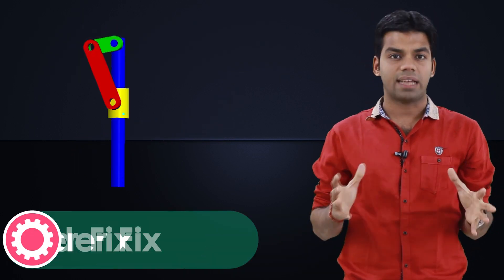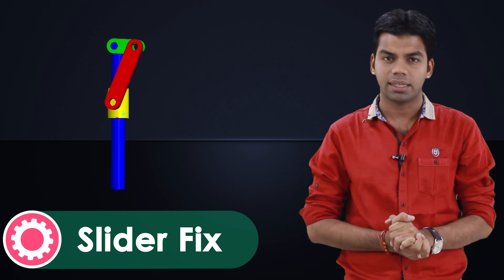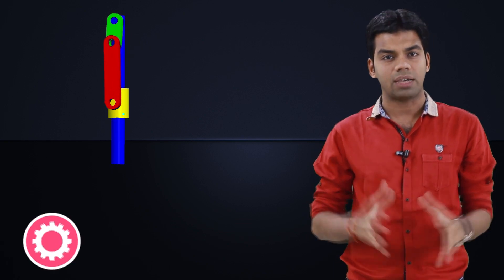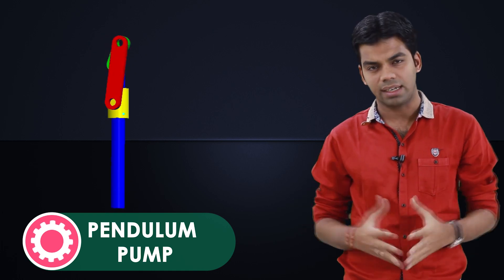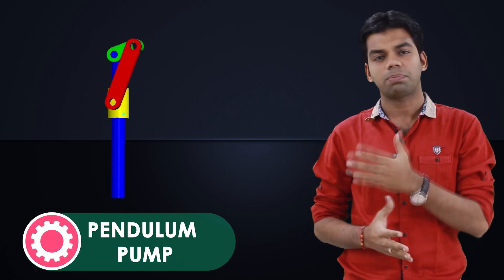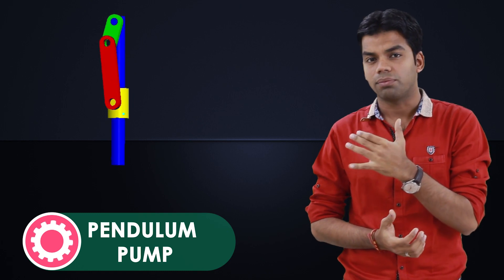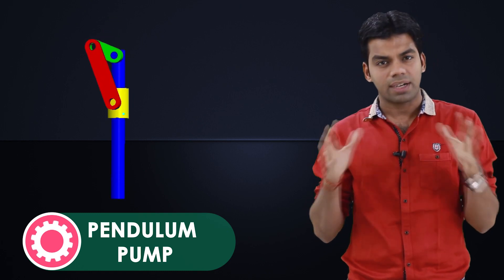In the last inversion, we fix the slider. When the slider is fixed, you get a mechanism that is used in a pendulum pump — or in simple language, the hand pump which we use in our daily life. So this particular mechanism is used in the hand pump when the slider is fixed.